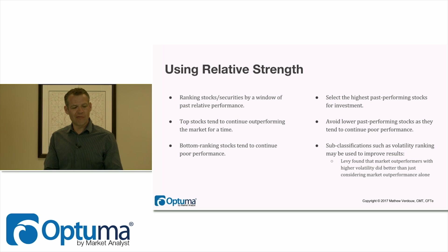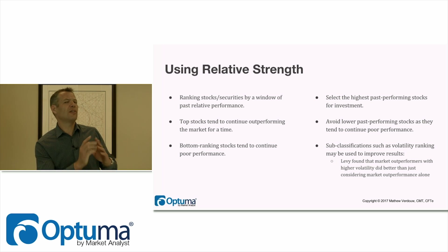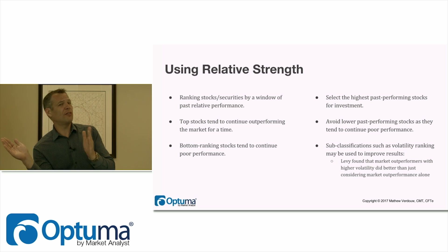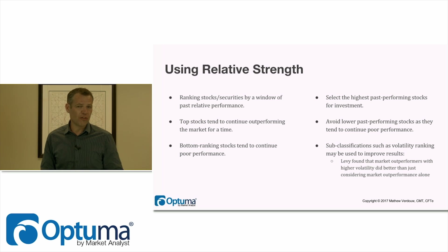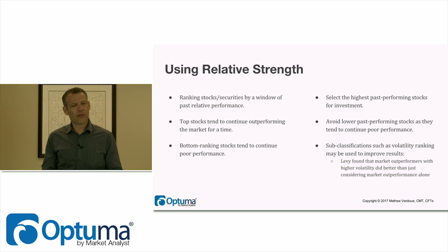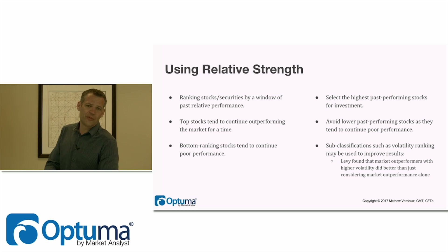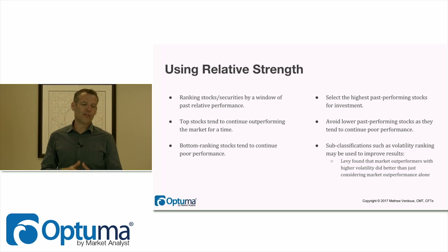One way of doing this is ranking stocks and securities by their past relative performance. We can use a six-month lookback — take the relative value today and the relative value six months ago, calculate the percentage change, then rank all securities by that measure. What studies have found is that top-ranked stocks tend to continue outperforming the market in the near future — they end up being the best performers. Bottom-ranking stocks tend to continue their poor performance after that point as well.